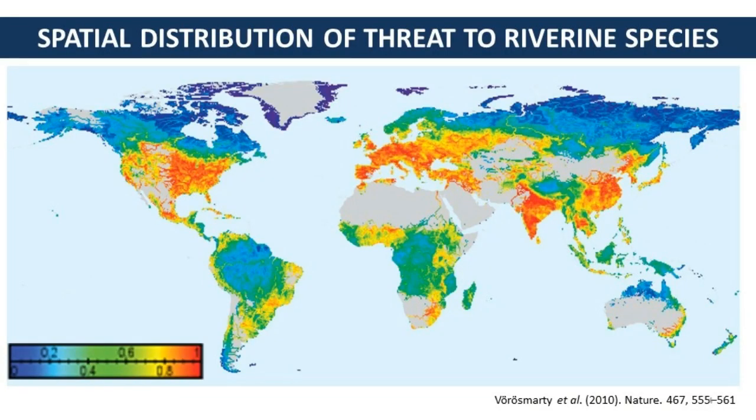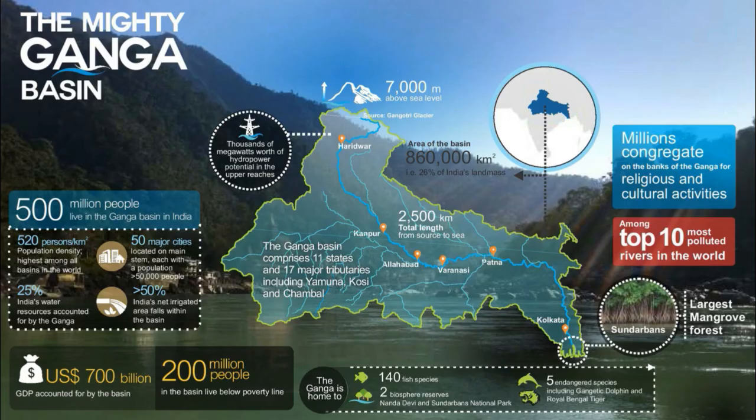Freshwater biodiversity has been declining at a faster rate than its terrestrial and marine counterparts. The same is applicable for the biodiversity of the Ganga River Basin.